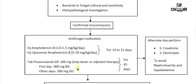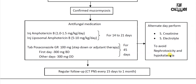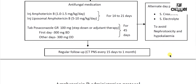You have to perform routine kidney function tests and electrolyte monitoring while on liposomal or normal amphotericin B. There is a specially designed protocol for giving amphotericin: you have to rehydrate the patient first, then give amphotericin slowly, and after that supplement with normal saline — especially with one ampoule of potassium. After discharge, regular follow-up is necessary in the form of nasal endoscopy.